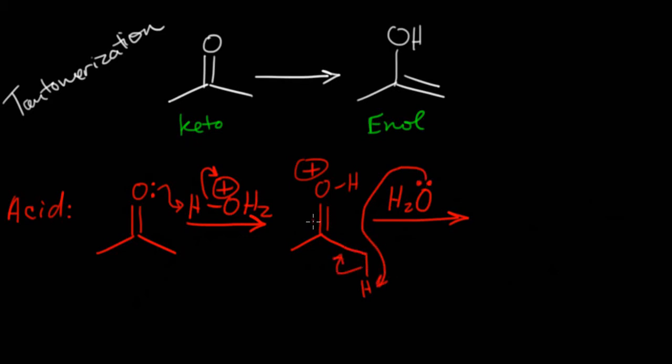You have to flop electrons down, and when you do that, break this pi system, and we've created our enol. Again, I keep forgetting to show my arrows as being reversible, but there we go.